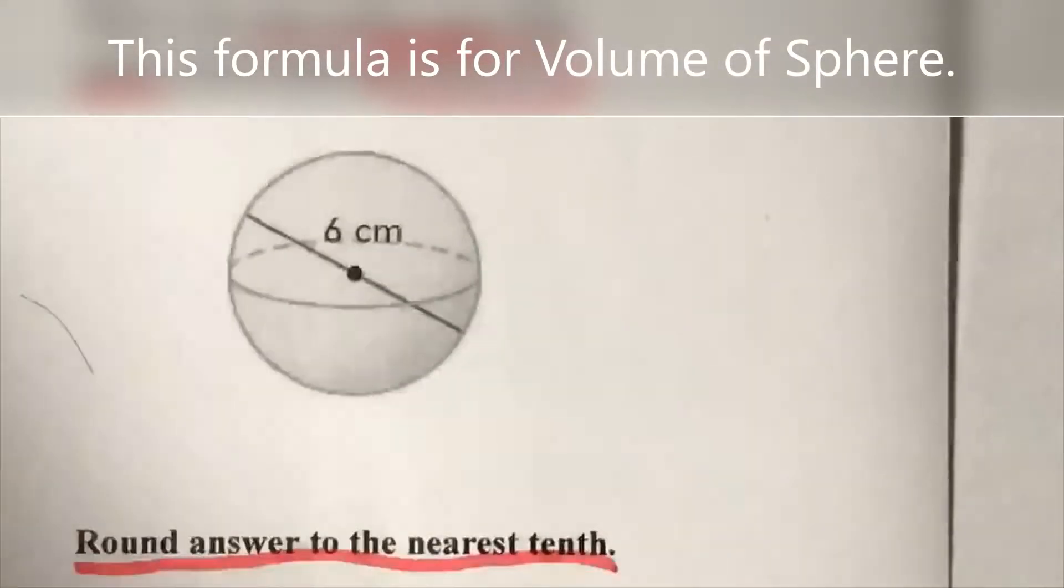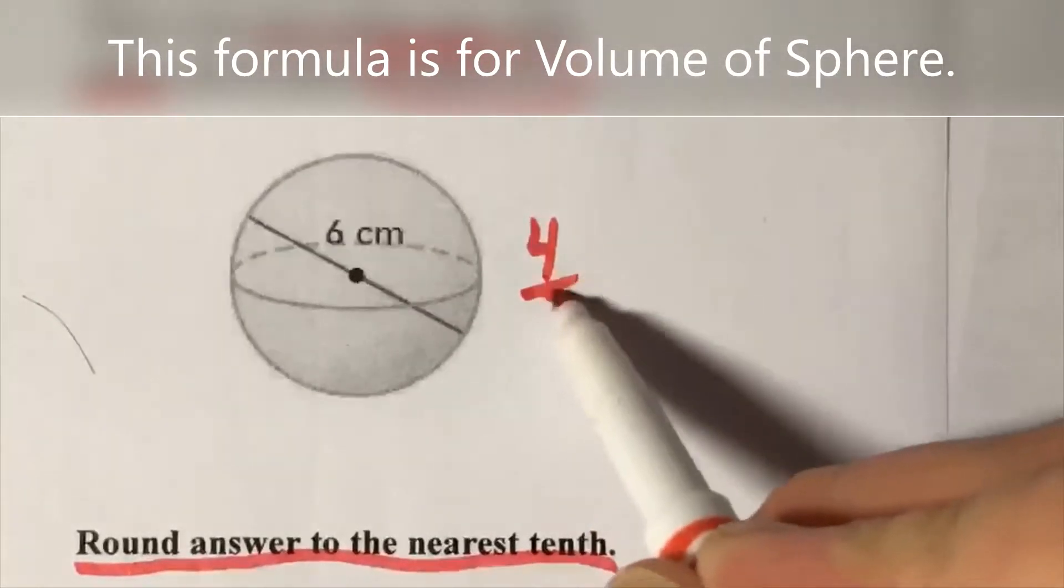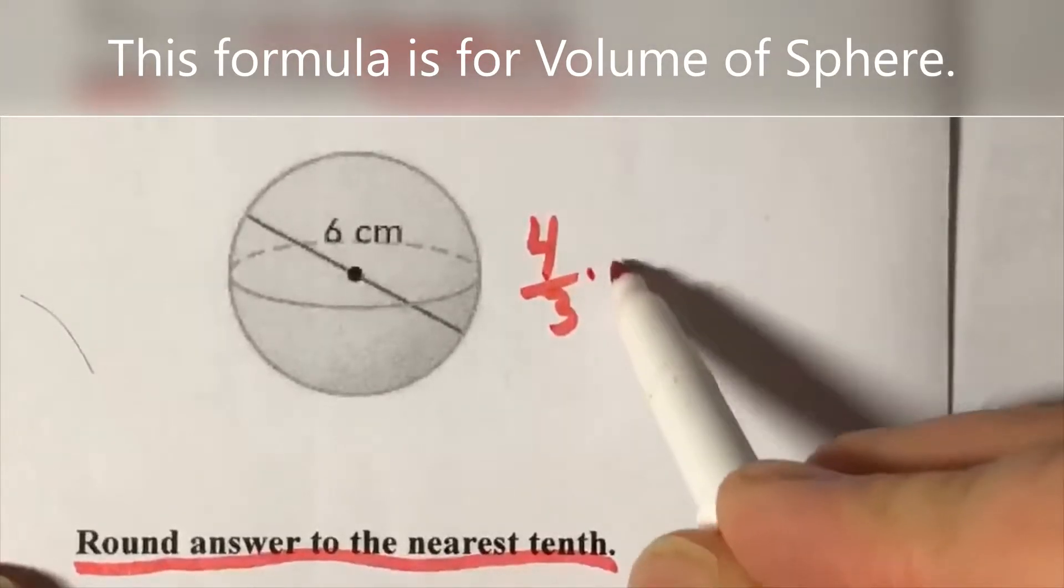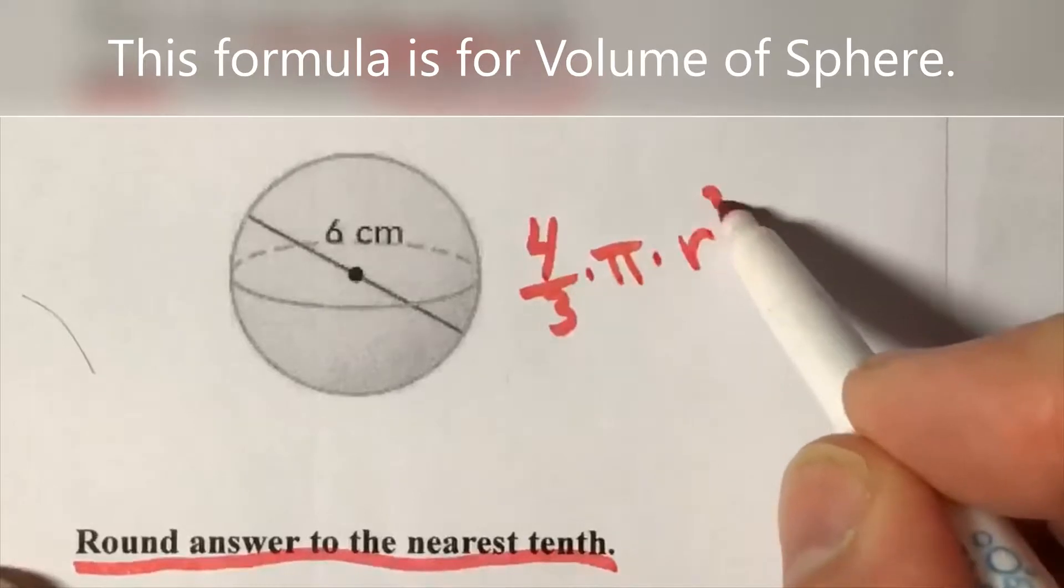Our formula chart and we write down the formula of a sphere. All right, so that's four thirds times π times r to the third.